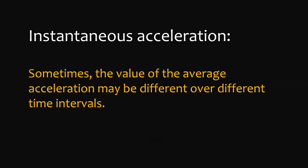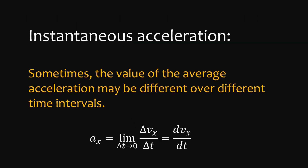Now that we know about average acceleration, we can also talk about instantaneous acceleration. Sometimes the value of acceleration may be different over different time intervals, so we can talk about the acceleration at any instant of time. Similar to instantaneous velocity, we use calculus to get the limit of delta vx over delta t as delta t approaches 0. This also involves getting the slope of the tangent line in a velocity versus time graph, and is equivalent to the derivative of vx with respect to t.